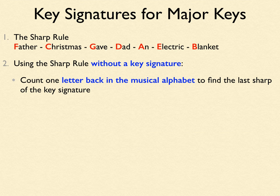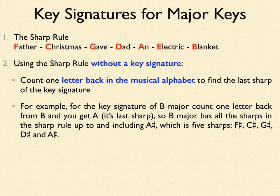How do we use the sharp rule without a key signature? Say you're asked to find the key signature of E major, B major, C sharp major, or G major — any major scale or key that uses sharps. You count one letter back in the musical alphabet to find the last sharp of that key signature. For example, for B major: count one letter back from B and you get A, which is the last sharp. So B major has all the sharps up to and including A sharp — five sharps in total: F, C, G, D, and A.